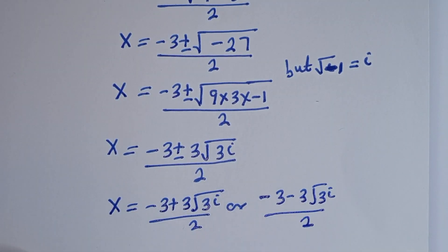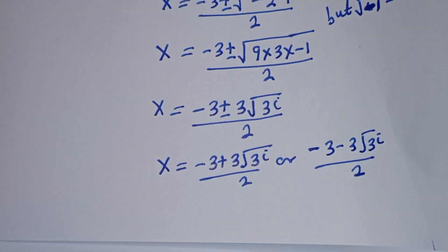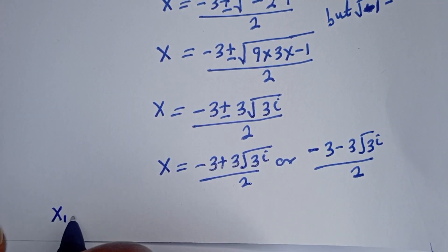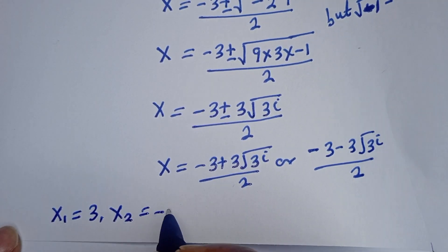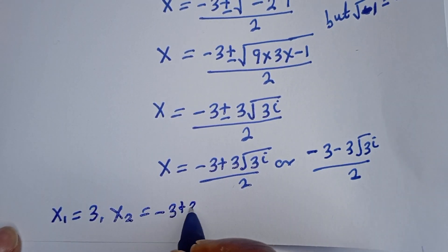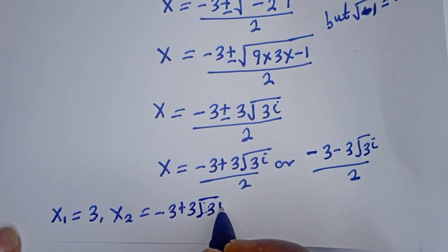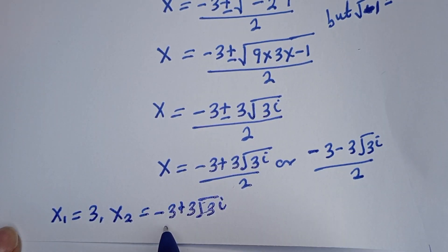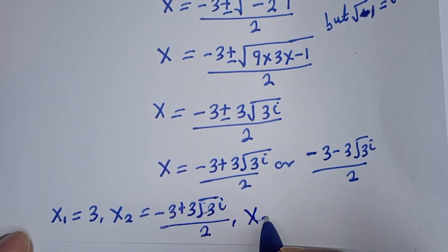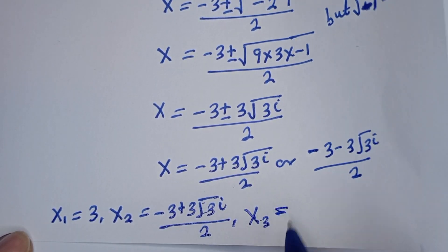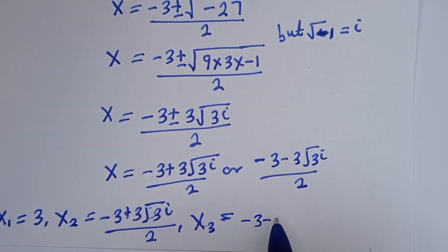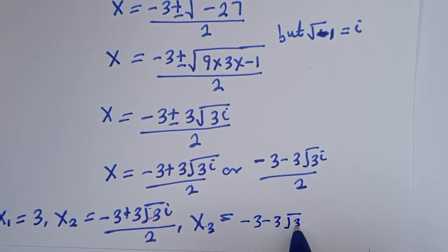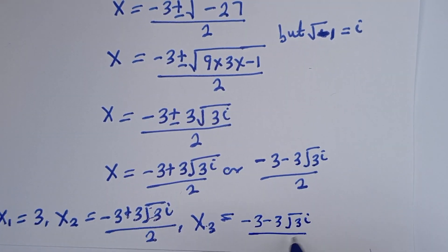Our final answers are: s₁ equals 3, s₂ equals (minus 3 plus 3i√3) over 2, and s₃ equals (minus 3 minus 3i√3) over 2.